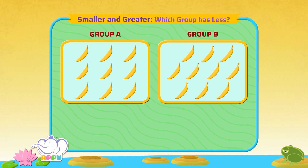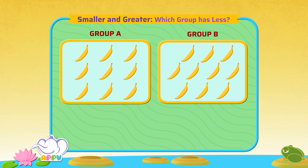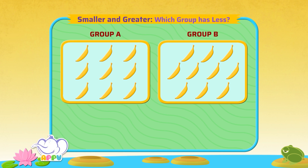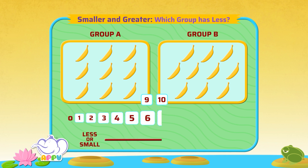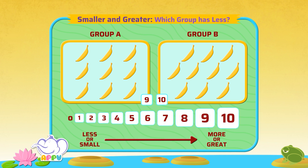Which group has less? Let's look at group A. It has 9 bananas and group B has 10 bananas. Let's compare and see which group has the lesser number of items. If we see the order of numbers, 9 comes before 10. So 9 is less than 10.